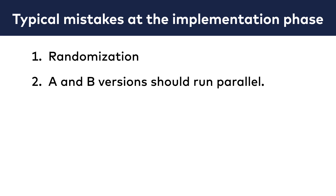Number 2: A and B versions should run in parallel. At this point I don't have to tell you that if you run your version A in September for your whole audience, then your version B in October — well, that's not an A/B test.